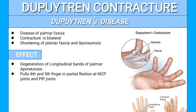The first effect of Dupuytren's contracture is deterioration of the longitudinal bands of the palmar aponeurosis, or palmar fascia, which can cause nodular formation. As you can see in the figure, there is a nodule in Dupuytren's contracture at the base of the fourth and fifth fingers.